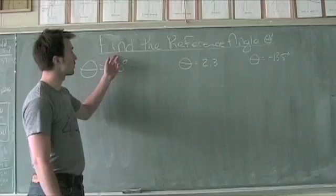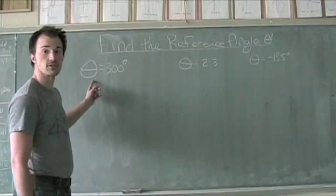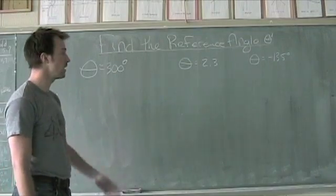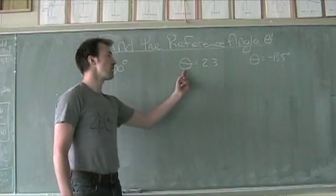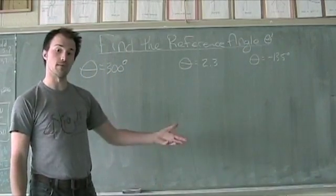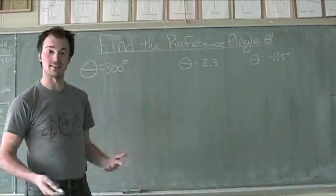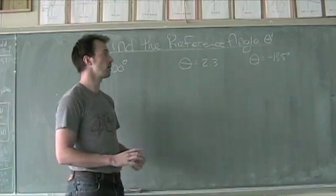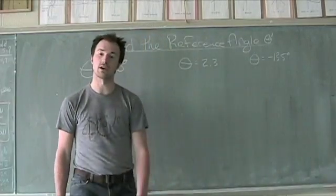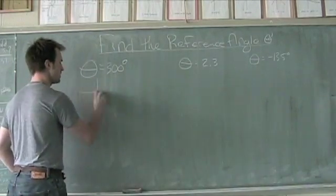In this video we're going to be finding the reference angle theta prime in three different cases. The first case is where theta equals 300 degrees, so we're using degree format. In our second example, theta equals 2.3. Because it doesn't have a degree measurement, that means it's in radians, because radians don't have a formal unit. And lastly, when theta equals negative 135 degrees.